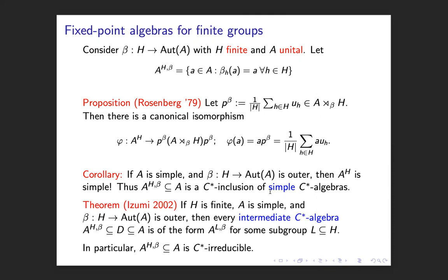Izumi proved in 2002 that whenever a finite group H acts on a simple C*-algebra by an outer action, every intermediate C*-algebra between A^H and A is also a fixed-point algebra for some subgroup L of H. This is the analogue of the Cameron-Smith result for fixed-point algebras. In particular, the inclusion A^H ⊂ A is C*-irreducible, because intermediate fixed-point algebras of outer actions must be simple, so every intermediate algebra is simple.